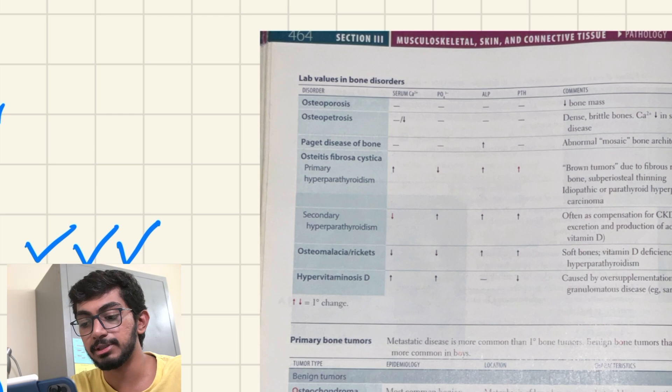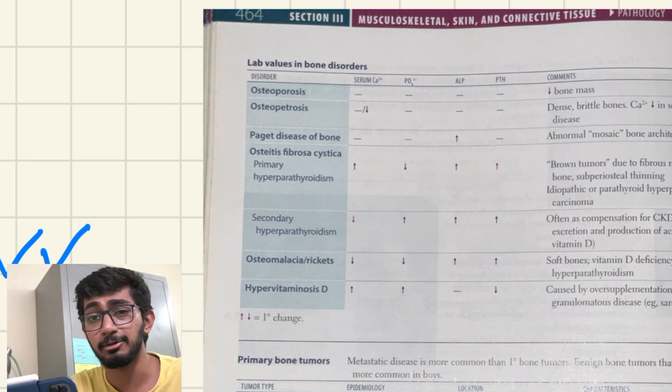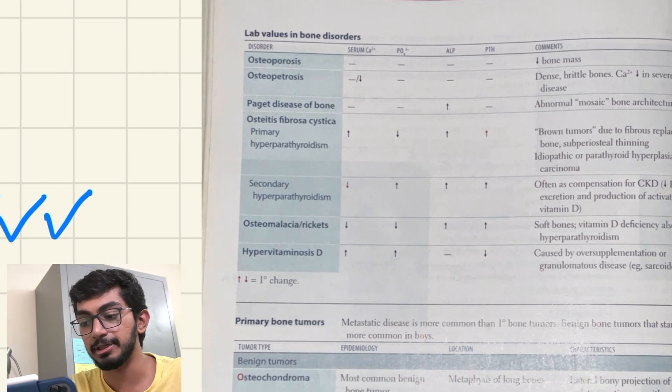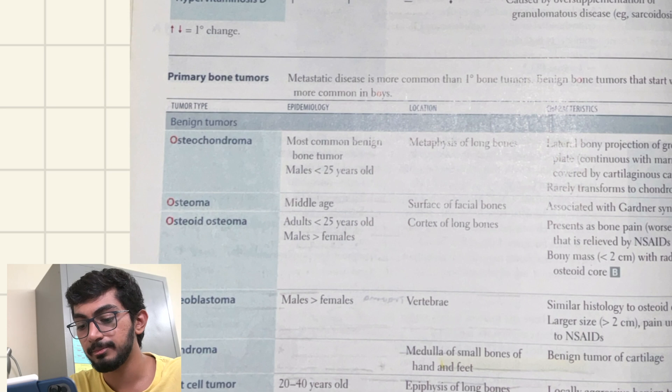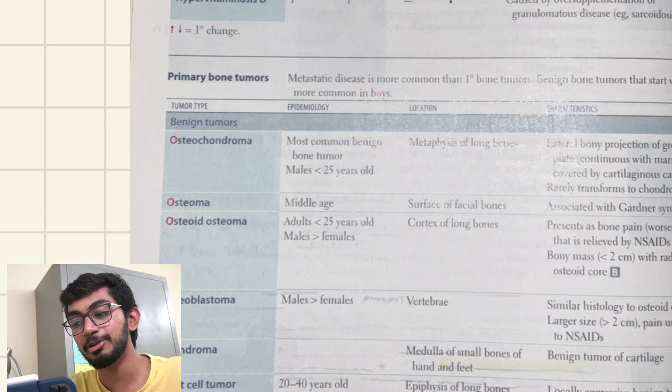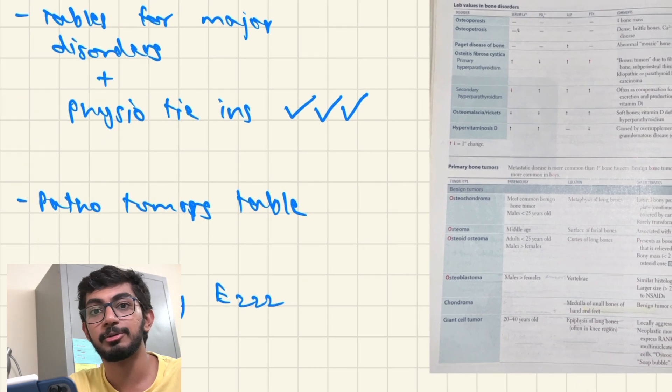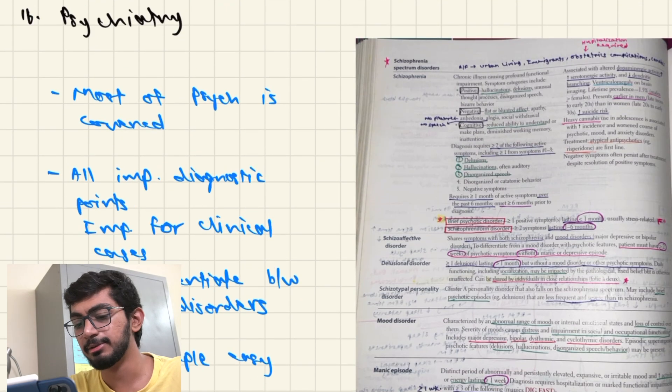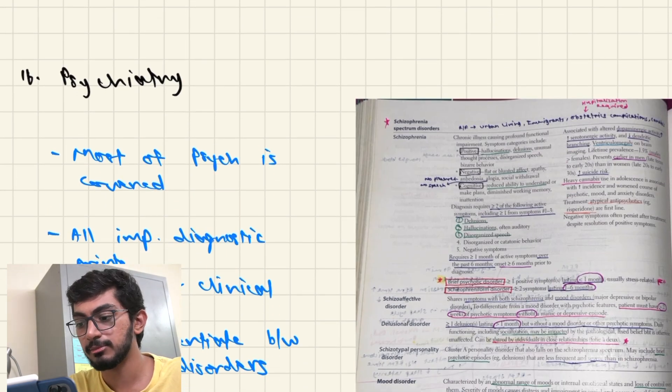There are a lot of tables for the major disorders like osteoporosis, osteopetrosis, Paget's disease. Everything is given with arrows, like in which disorder calcium is increased, phosphate is decreased, alkaline phosphatase is increased or decreased and the parathyroid hormone. They've also given bone tumors in short. And the mnemonic that they've given here is that benign bone tumors start with O and they're most common in boys, like the osteochondroma, osteoma, osteoid osteoma and osteoblastoma. So yeah, this will be very easy to revise and just go through it quickly.